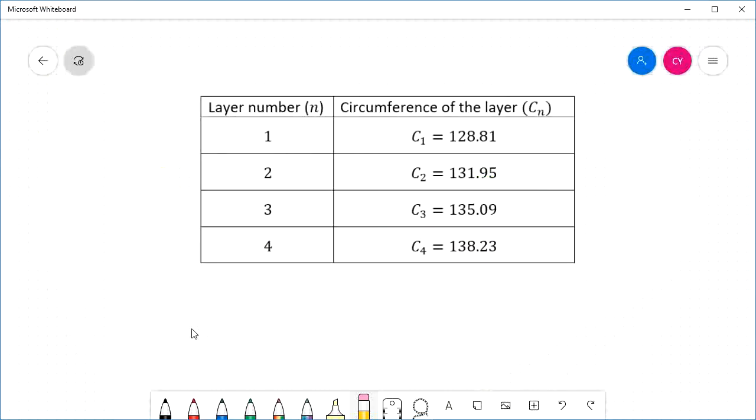In the last video, I introduced the idea of a sequence, which is a list of numbers in order that can be described using some kind of rule. And the one we're particularly interested in is this one. Each C is the circumference of a layer on a roll of toilet paper.